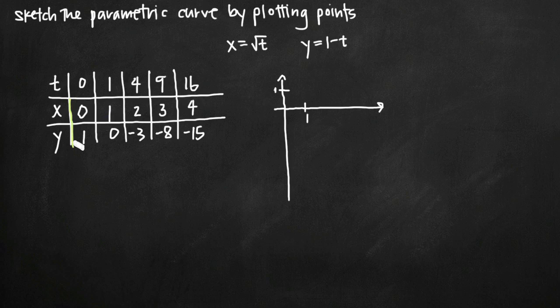So our first point here is the point 0, 1. So we're going to go ahead and say 0, 1, that's this point right here along the y axis. Now we have the point 1, 0, that's this point right here along the x axis.